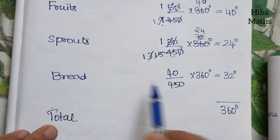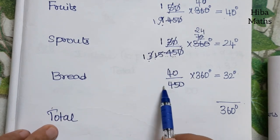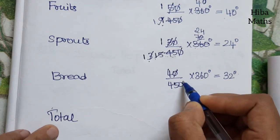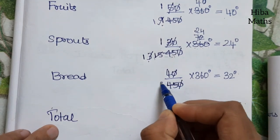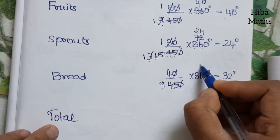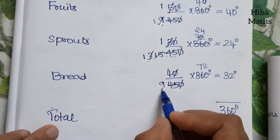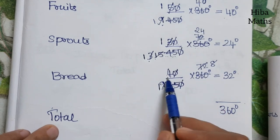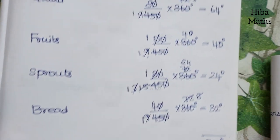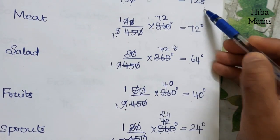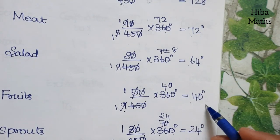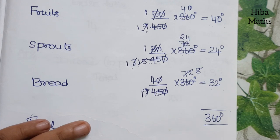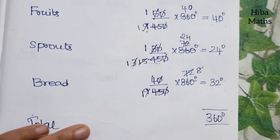For bread: 40 divided by 450, multiplied by 360. The answer is 32 degrees. To verify, we need all the central angles to add up to 360 degrees: 128 plus 72 plus 64 plus 40 plus 24 plus 32 equals 360. Correct.